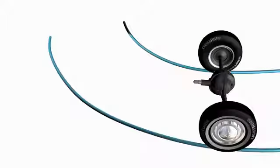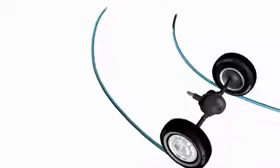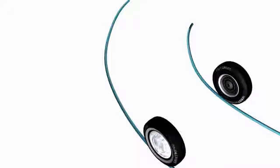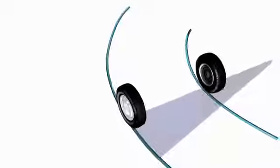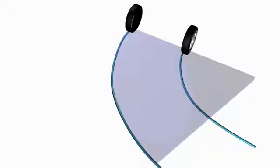Consider these wheels which are negotiating a turn. It is clear that the left wheel has to travel more distance compared to the right wheel. This means the left wheel has to rotate at a higher speed.